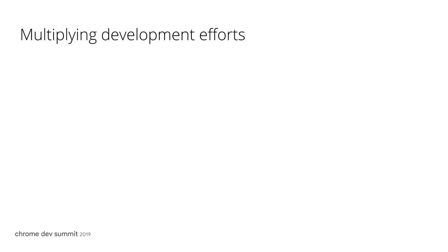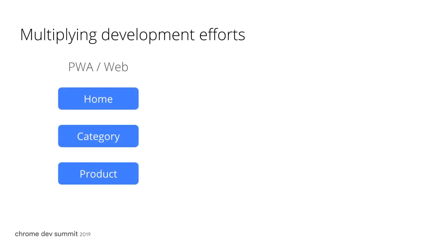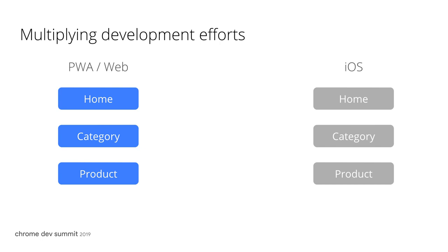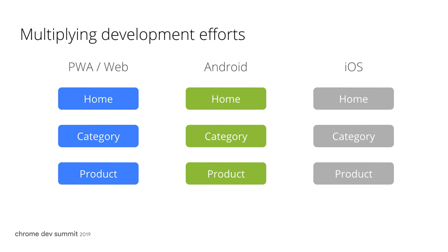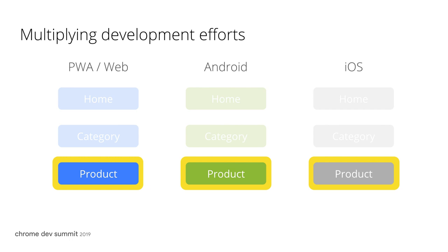Imagine that you build a web application with home, category, and product pages. It's a great experience for web users, but that's not enough to cover all the users. So you hire a team to build an iOS app with identical features to the web, and another team to build the Android app for the Play Store. At the end, there are three teams that work with quite different tech stacks. What if you made some changes to the web — for example, a new feature on the product page? To maintain consistency across the platforms, the other two teams need to implement similar functionalities. There are now increased maintenance costs.